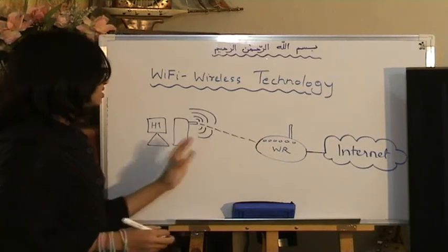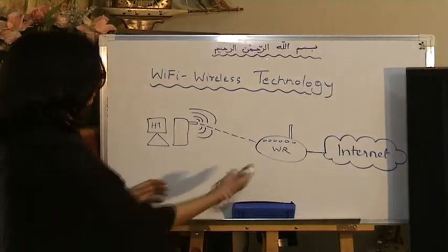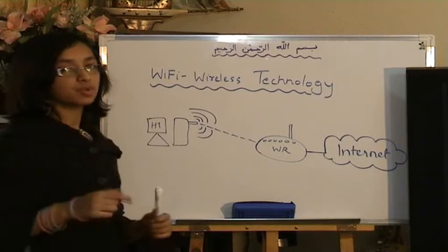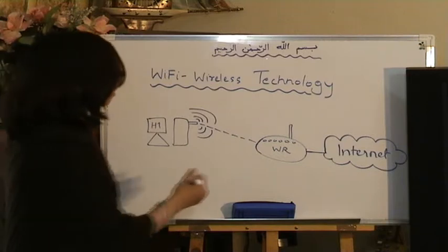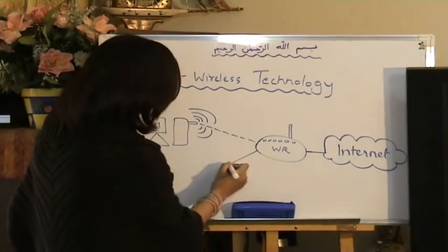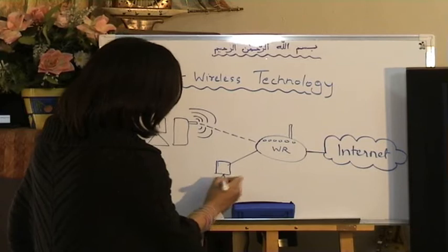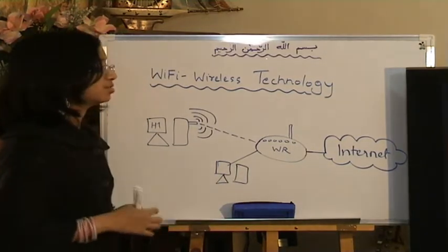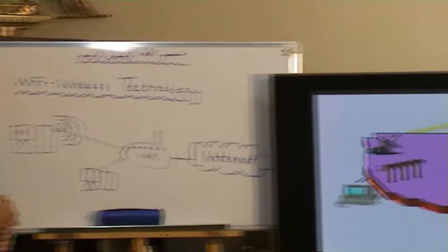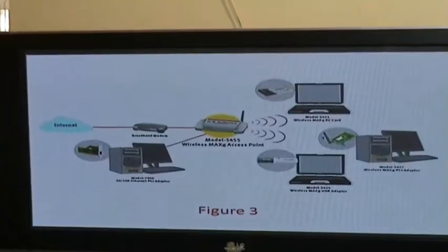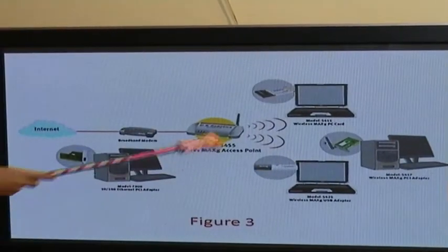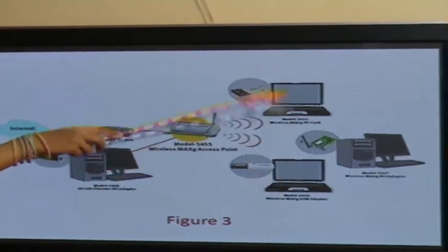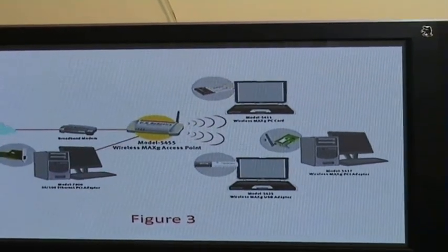Just because it's known as a wireless router and connects to computers wirelessly, it does not mean it cannot connect to computers with wire too — it can connect both ways. As shown in the next picture, a computer is trying to connect to a router with wire while some computers are connecting to it wirelessly as well.